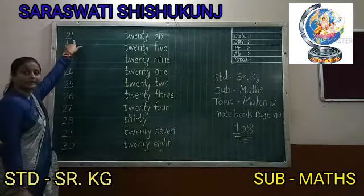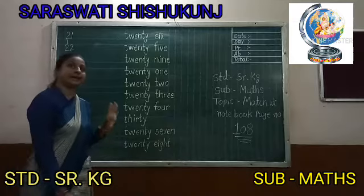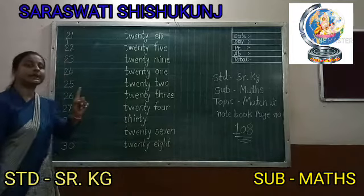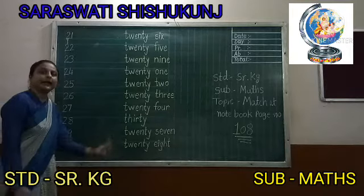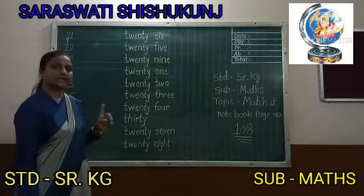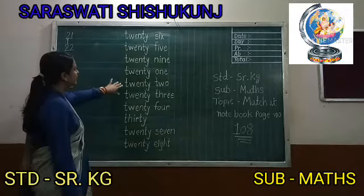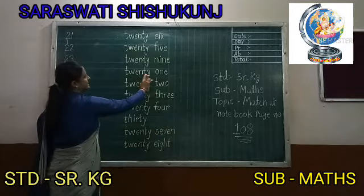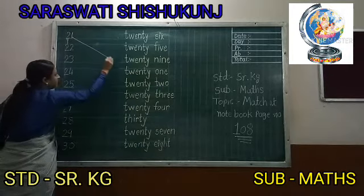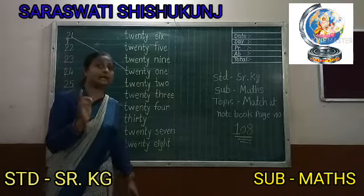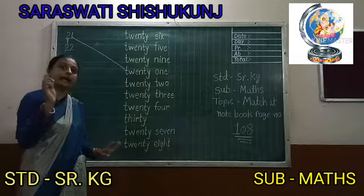First number is 21. Students, I hope you can speak properly and understand what is the number name of 21. T, W, E, N, T, Y — Twenty. O, N, E — 1. Twenty One. Now we have to find from the list where is Twenty One and match it. If you learn number names properly, then you can do matching easily.